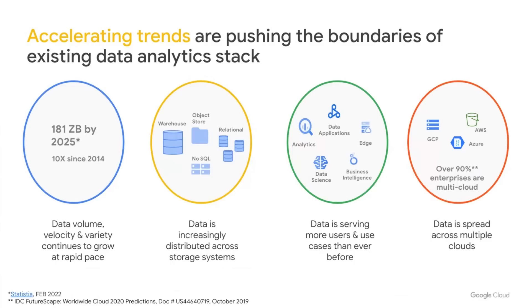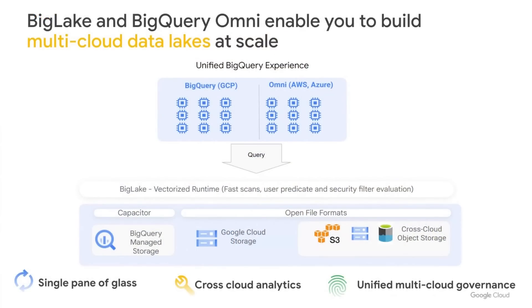Data is also increasingly spread across multiple clouds. In fact, the majority of enterprises globally have data sitting in a mix of cloud platforms. With these emerging data trends, more and more customers are gravitating towards multi-cloud data lakes. This also presents customers with several challenges such as data silos, data duplication, fragmented governance, complexity of tools, and increased costs. Here is where BigLake and Omni come in to help build and manage your data lakes across clouds at scale.